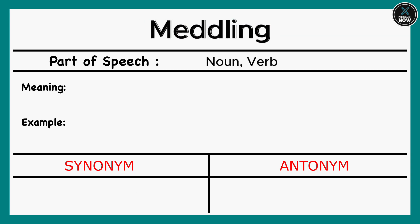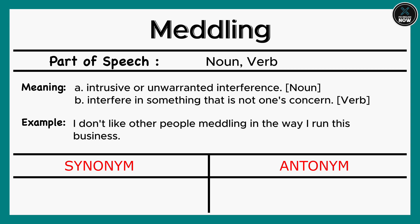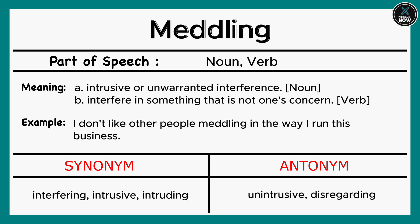Meddling: A. Intrusive or unwarranted interference (Noun). B. Interfere in something that is not one's concern (Verb). Example: I don't like other people meddling in the way I run this business. Synonyms: Interfering, Intrusive, Intruding. Antonyms: Unintrusive, Disregarding.